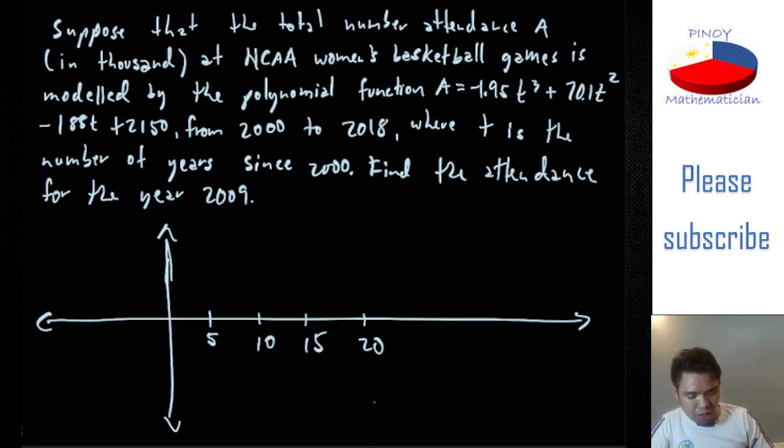So basically, this means that the year 2000 is here, the 0. Okay, so because this is T equals 0, that's the year 2000. So this one, and at year 2018 is here, the year 2018.